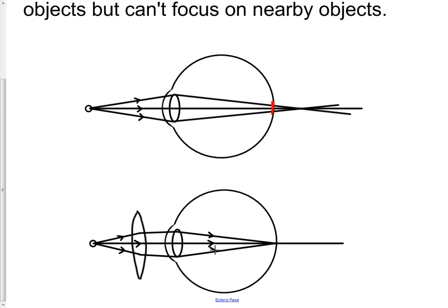So for uncorrected long sight, when looking at a nearby object the image would be formed behind the retina. To correct it we use a converging lens, which converges the rays a little bit. Those diverging rays from the object get converged slightly by the corrective lens, then converged more by the cornea and lens of the eye, and brought to a tight focus on the retina. Those are the key features to show in that diagram.